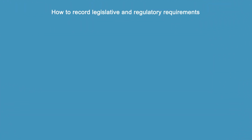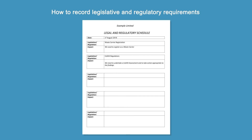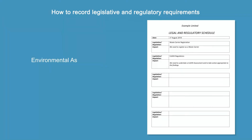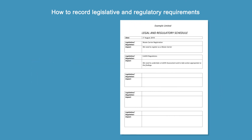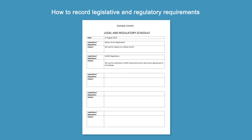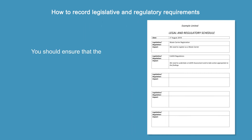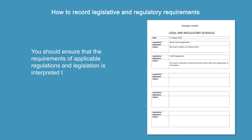Finally, we are going to address legislative and regulatory requirements. Here is an example legal and regulatory schedule. The environmental aspects of an organisation can often be governed by environmental legislation, such as waste disposal and COSHH. That is why we recommend you draw up a schedule which is reviewed once a year as a minimum, to keep a record of what items of legislation or regulation apply to your business. You should be making sure that the requirements of applicable regulations and legislation have been interpreted throughout your business in the correct way and you respond to them accordingly.